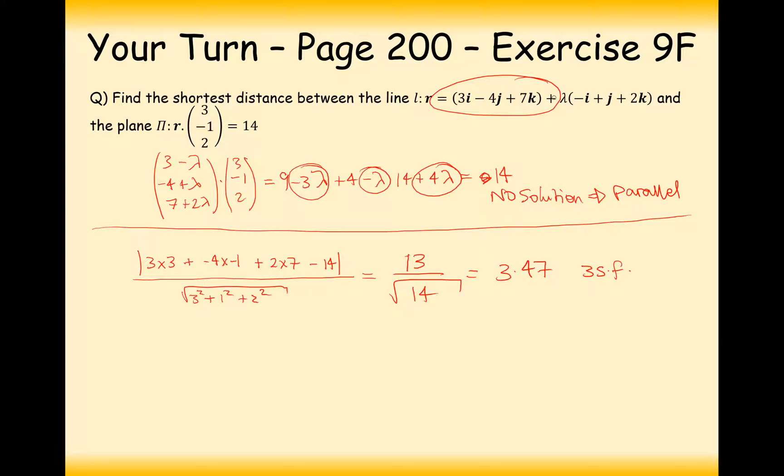It's as easy as just finding the shortest distance between a point and a plane when things are parallel, because it doesn't really matter where along this line you're finding the shortest distance from. It's just going to be a shortest distance constant throughout that whole parallel line. So just choose the easiest point that you know is definitely on that line which is your starting coordinate.